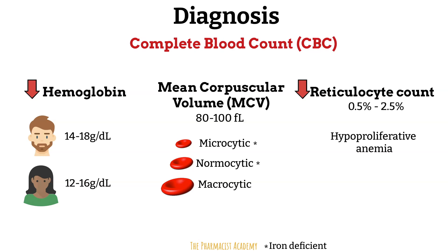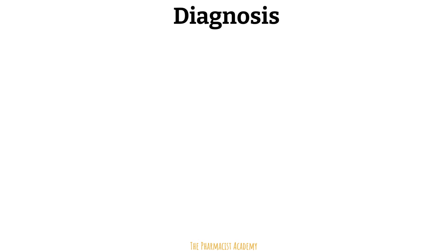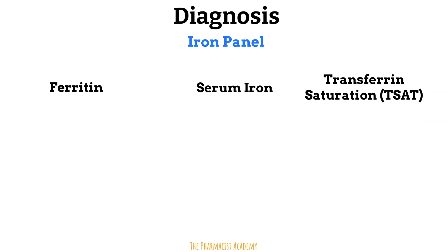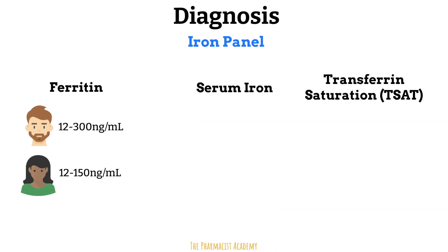To confirm iron deficiency, we check the body's iron status by looking at an iron panel or iron studies. Ferritin is a protein that stores iron in cells and releases it into the blood as needed. The levels of ferritin symbolize the amount of iron stored in the body. In males it ranges from 12 to 300 nanograms per milliliter, and in females 12 to 150. In iron deficiency anemia patients, the ferritin levels are usually low — this plus the anemia is enough to make the full diagnosis. Note that ferritin is an acute phase reactant, so during inflammation, infection, or cancer, ferritin levels increase and can be falsely normal even in iron-deficient patients.